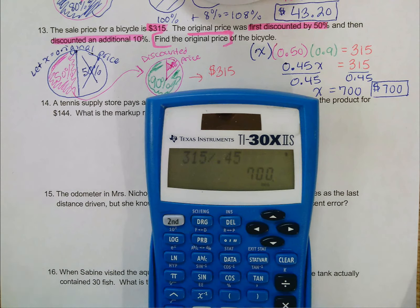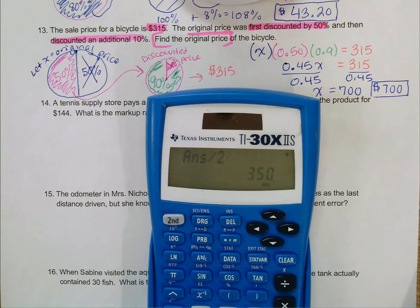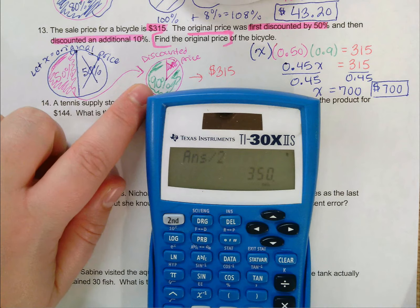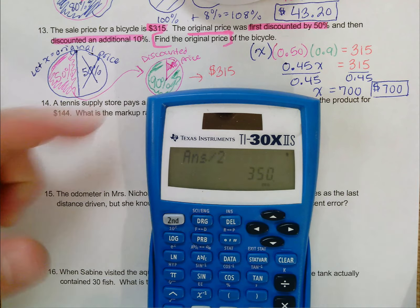First, we had a 50% discount. So half of 700 is 350. So that's how much it costs after my discount. Then I got another 10% off. Let's see, 10% of 350, that's one tenth. That's just 35.